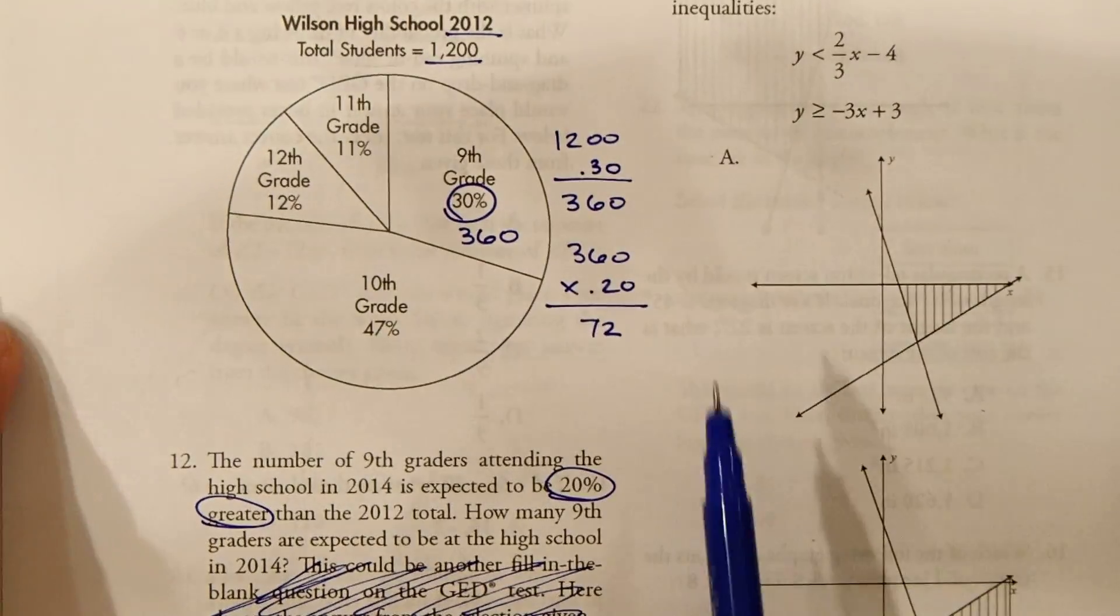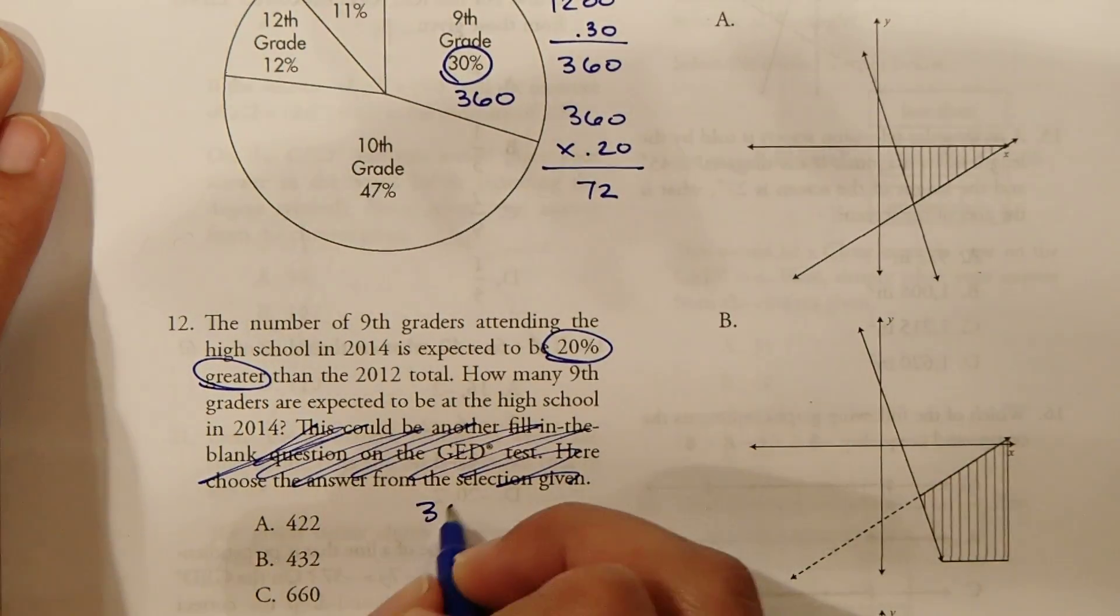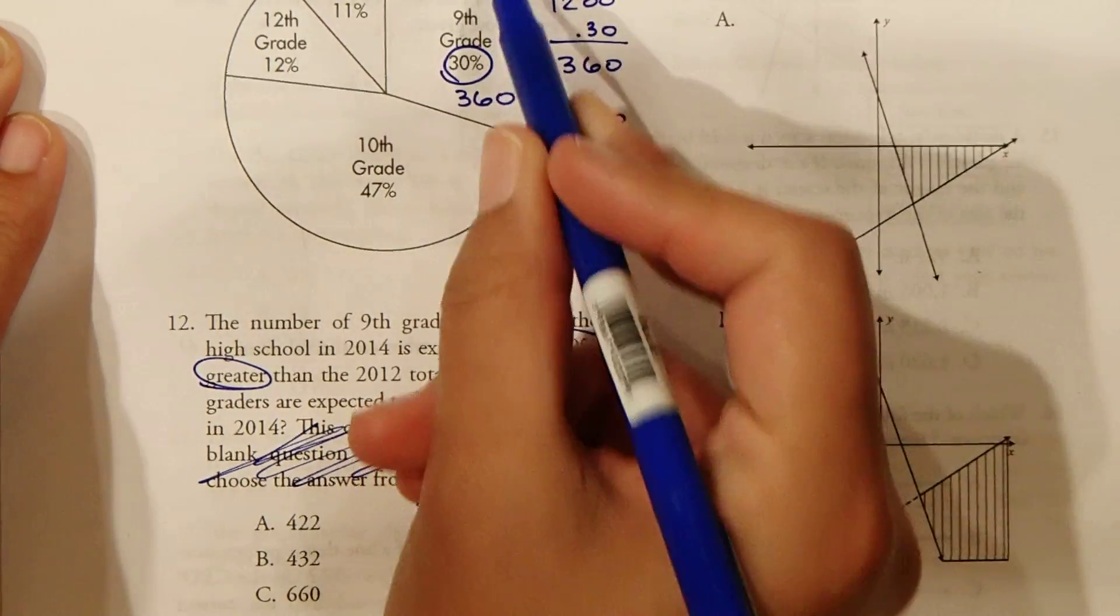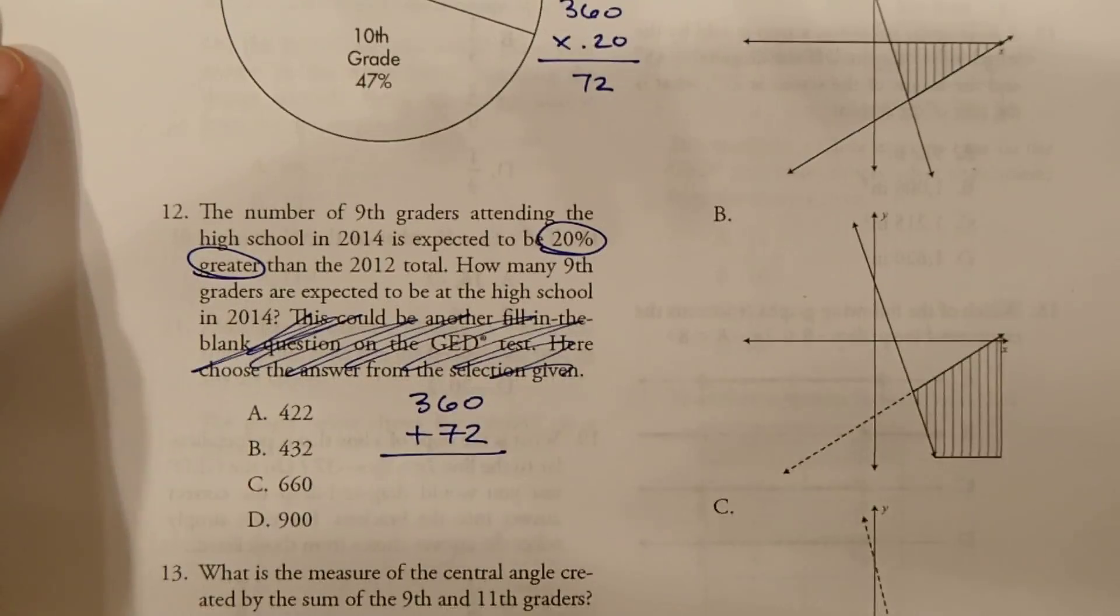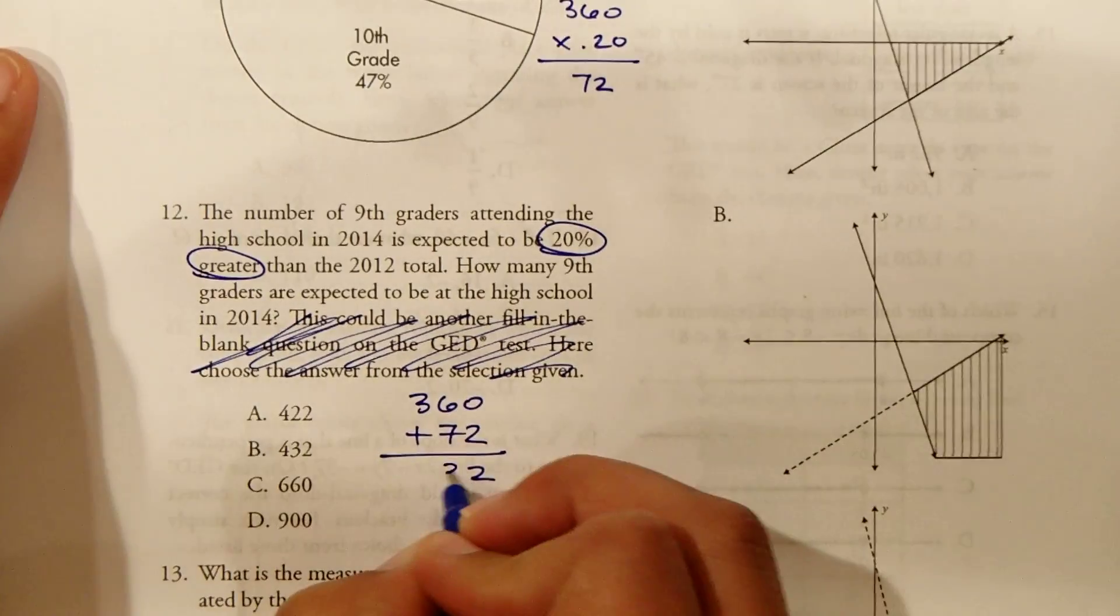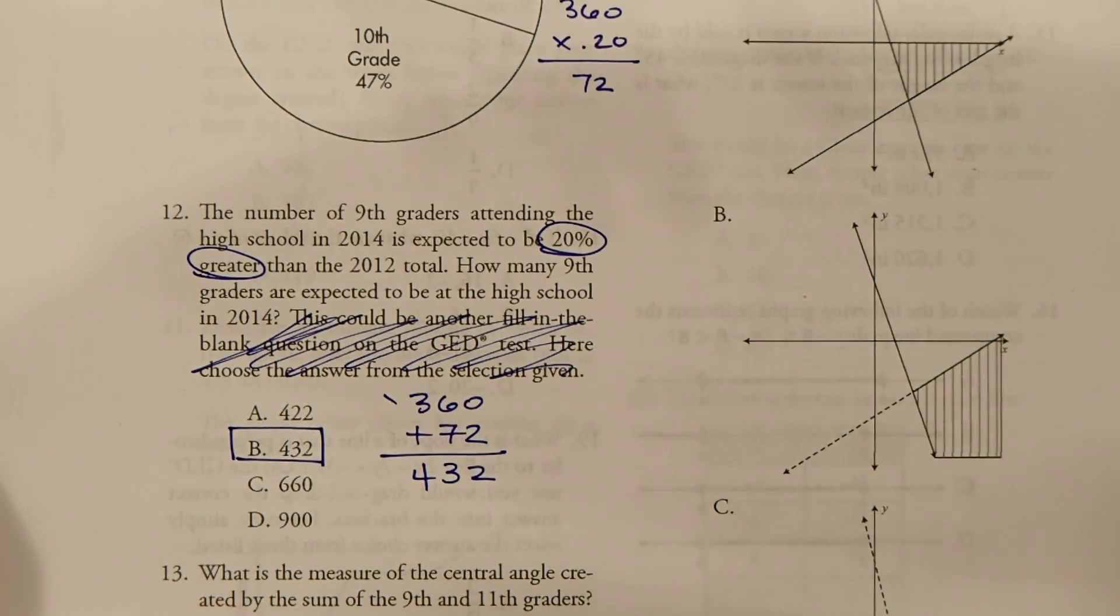So the total amount of students is going to be 360 that accounted for the 2012 population plus the additional 20% which was 72. So our answer is B, 432 students.